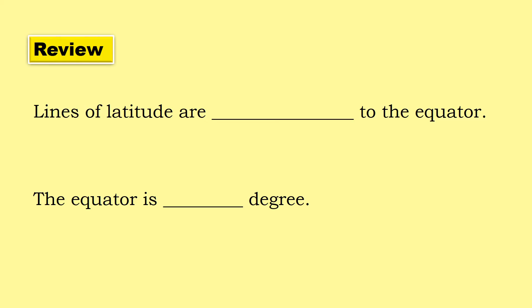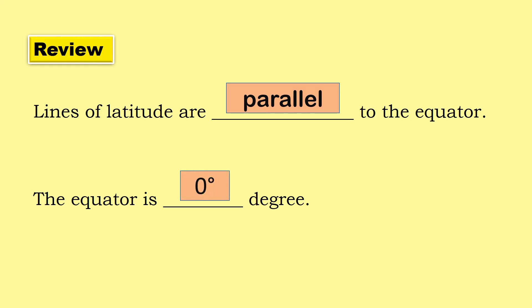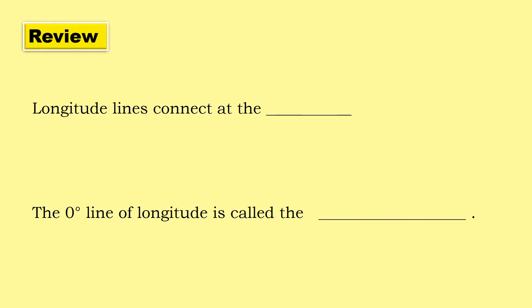Let's do a quick review. Lines of latitude are parallel to the equator. The equator is the zero degree line. Lines of longitude connect at the poles. The zero degree line of longitude is called the Prime Meridian.